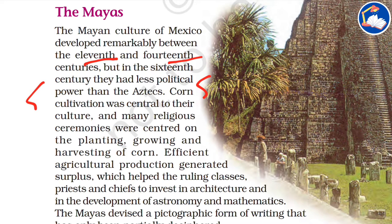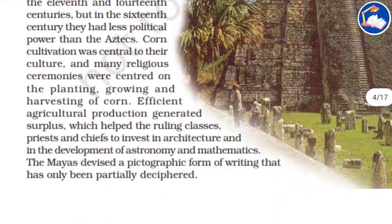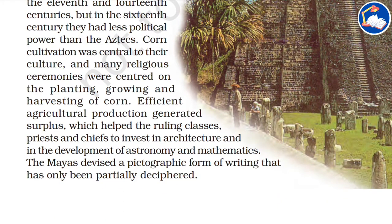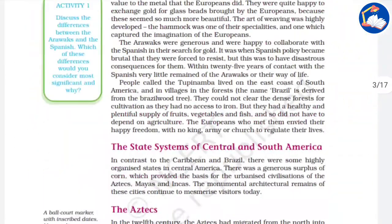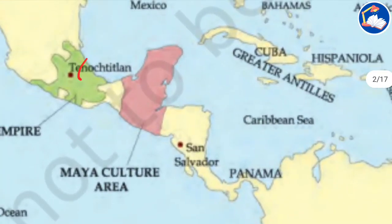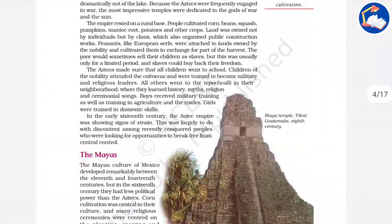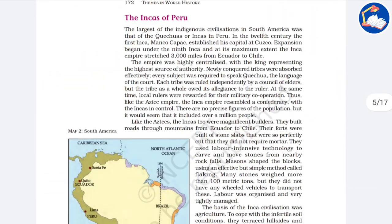Among the Mayas, corn was central and many religious ceremonies were centered on the planting, growing, and harvesting of corn. Efficient agricultural production generated a surplus which helped the ruling classes — priests and chiefs — invest in architecture and the development of astronomy and mathematics. The Mayan culture occupied this region on the map.